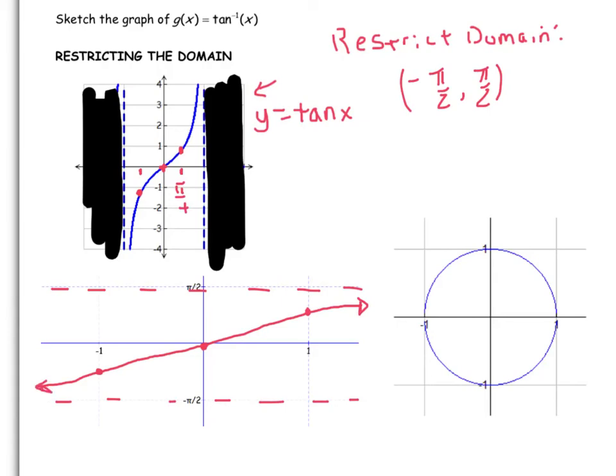So we can talk about the domain of this inverse here. This is tan inverse, and its domain is negative infinity to infinity, you can see. And its range is negative π/2 to π/2.